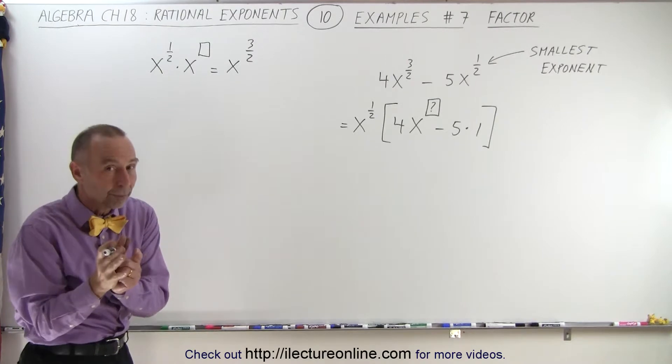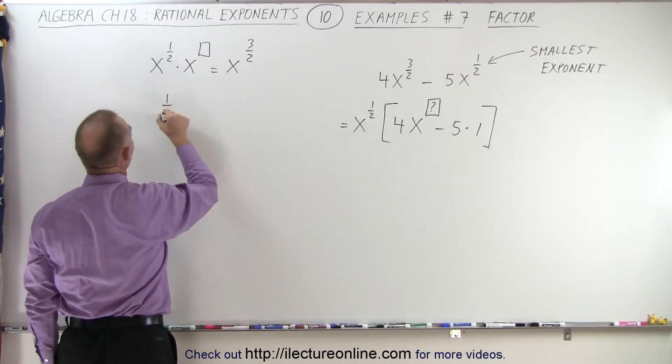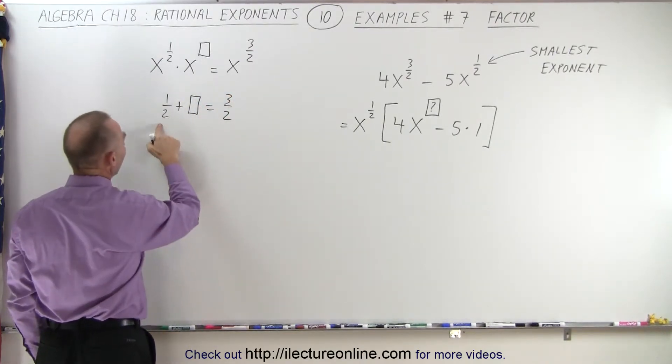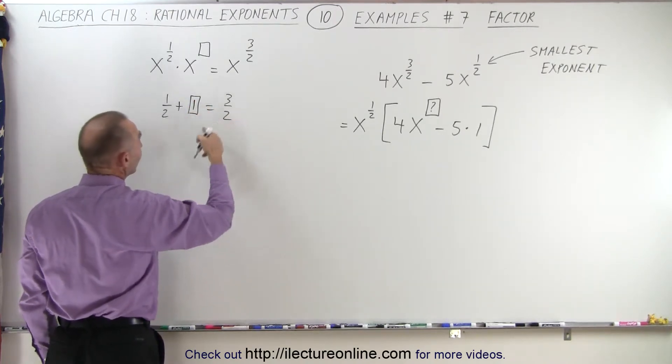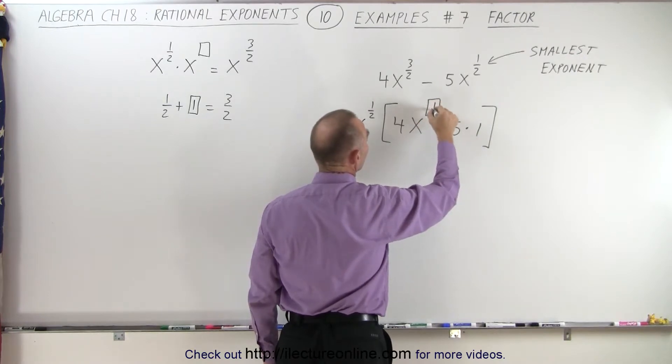Remember the rule: when you multiply and the bases are the same, you add exponents. So essentially, 1 half plus what gives us 3 halves? And the answer is a half plus 1 is 3 halves. So in other words, the exponent that goes in here is equal to the exponent 1.